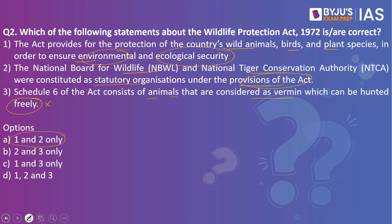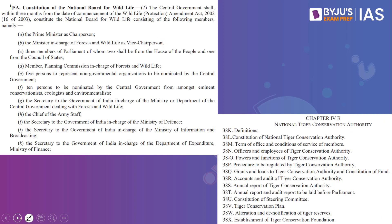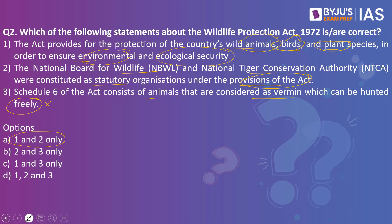The first statement is correct — the Act provides for the protection of wild animals, birds and plant species. The second statement is also correct: the National Board for Wildlife is constituted under Section 5A of the Act, and Chapter 4B speaks about the National Tiger Conservation Authority. Since statements 1 and 2 are correct and statement 3 is wrong, the answer is A.